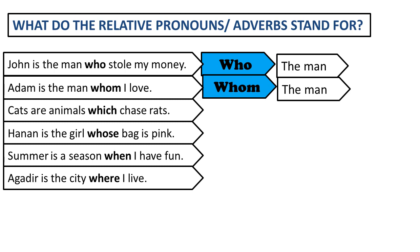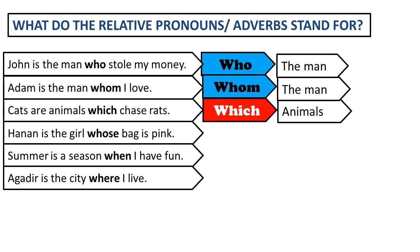Number three: Cats are animals which chase rats. What do you think which stands for? Animals. Number four: Hanan is the girl whose bag is pink. Where is the relative pronoun in the sentence? Whose. What do you think it stands for? The girl.